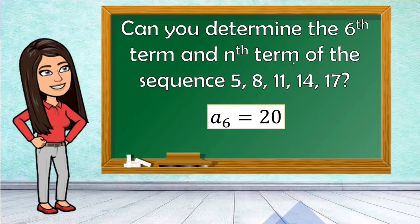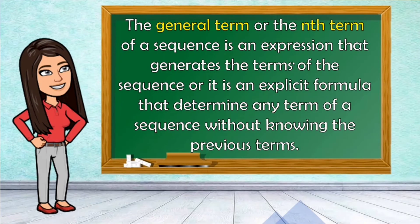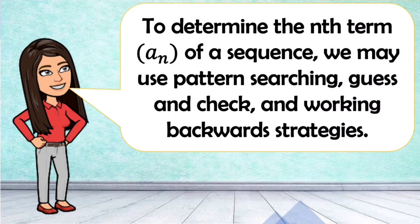Next, we need to determine the nth term. The general term or the nth term of a sequence is an expression that generates the terms of the sequence, or it is an explicit formula that determines any term of a sequence without knowing the previous terms. To determine the nth term, we may use pattern searching, guess and check, and working backward strategies.